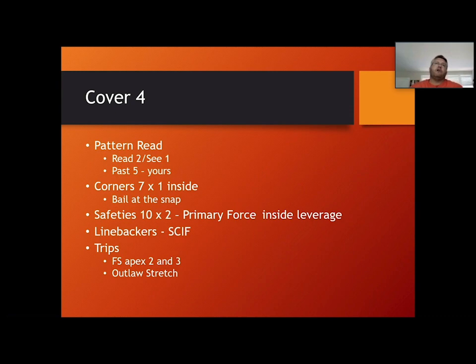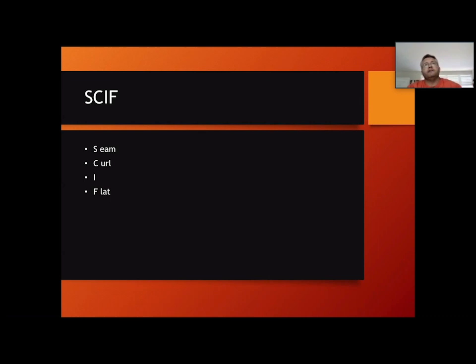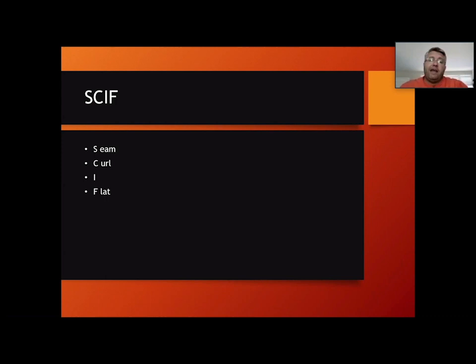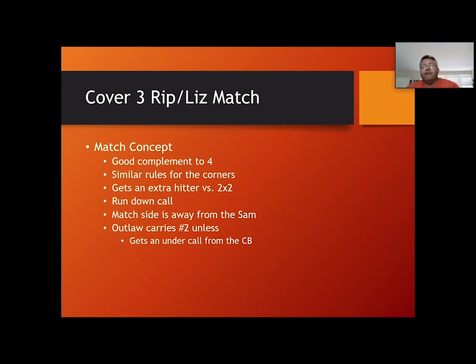Linebackers are 'Skiff' players — seam, curl, flat — priority is the seam, then the curl, lastly the flat. We want the ball thrown down there; we'll rally and tackle. If it's a short down and distance we're probably in man coverage. If we get trips, the free safety apexes two and three, and our backside safety makes a 'Stretch' call, moving toward the football — he's still primary force backside but eyeballing number three. In Rip/Liz match, the corner rules are similar to cover-four. This is a good first-down call versus two-by-two teams that run the football, and it keeps you safe against four verticals.